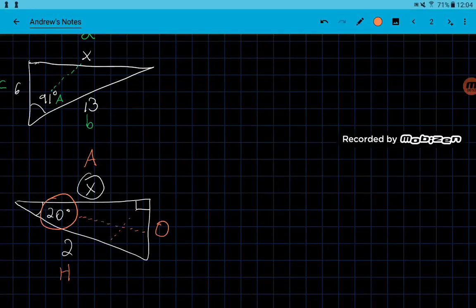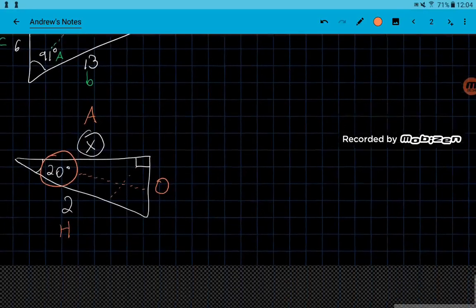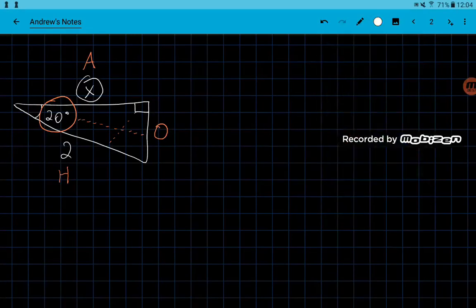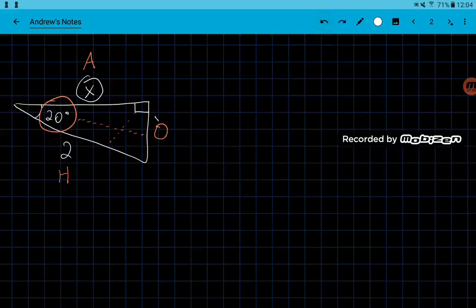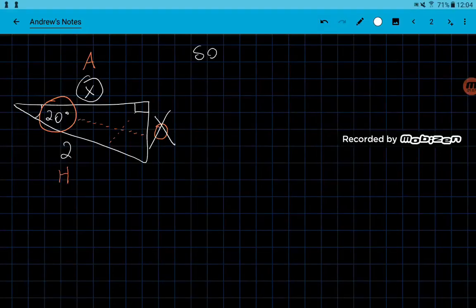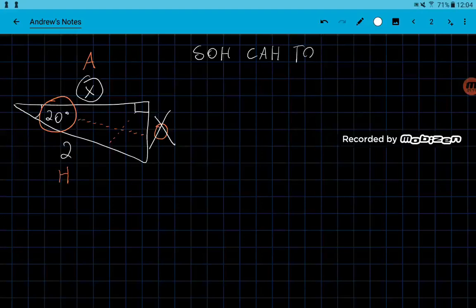So those are our sides now. Once we've got that figured out, now all we have to do is set up an equation. Notice that we don't know this side, so we don't want to use opposite, we want to use an equation that has adjacent and that has hypotenuse. So we're going to do SOH-CAH-TOA and find one that has adjacent and hypotenuse. So which one of those has that?